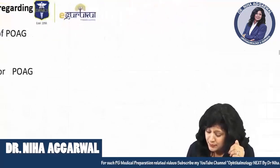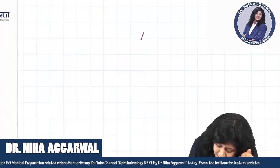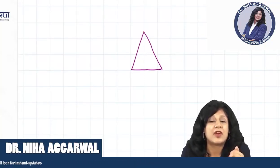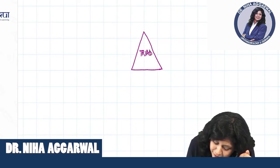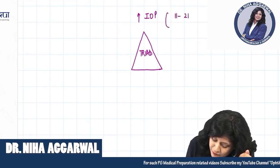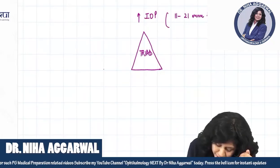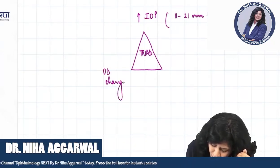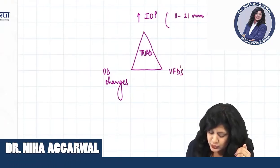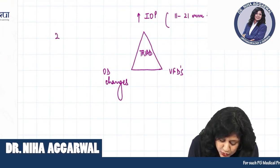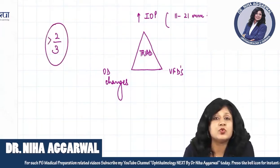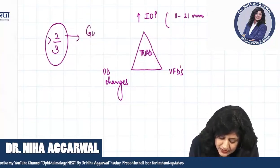Now, if you remember the terminology, glaucoma is actually frequently characterized by a triad. What is this triad? We have raised intraocular pressure — the normal range is 11 to 21 mmHg — then we have optic disc changes, and then we have visual field defects. We require at least two criteria out of the three to call it glaucoma.